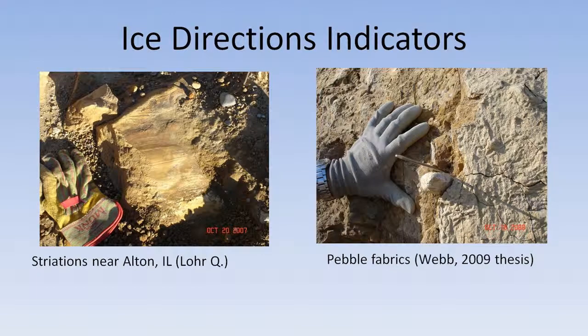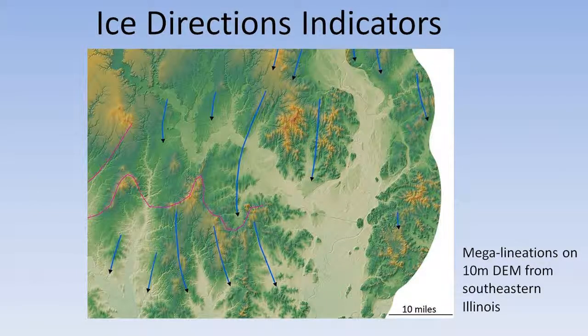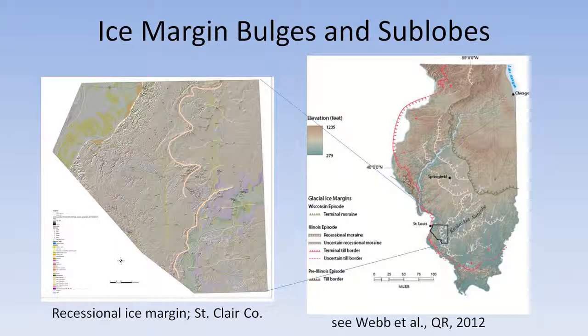We can reconstruct the direction of ice flow from striations, which are scratches in the bedrock, or from pebble fabrics — elongated pebbles — and measuring their directions. We can put that together with the bigger picture where we have megalineations on new DEMs we're obtaining recently, and streamlined features that are up to several kilometers long. Combining that with striation directions and other indicators, we can put together a map of Illinois showing perhaps margins and sublobes as the ice retreated back to Lake Michigan.